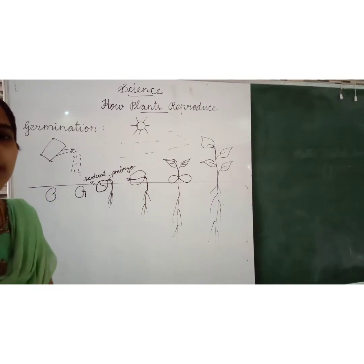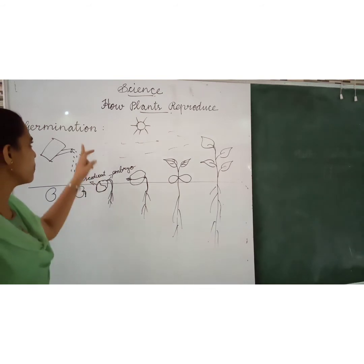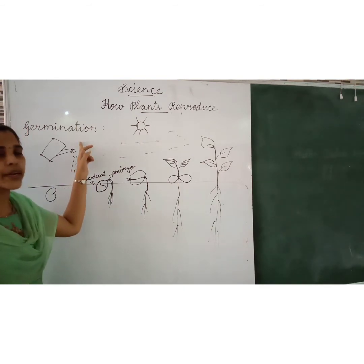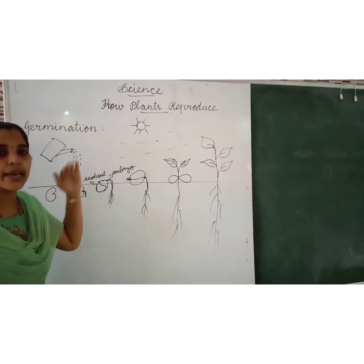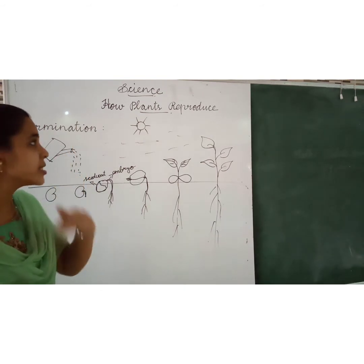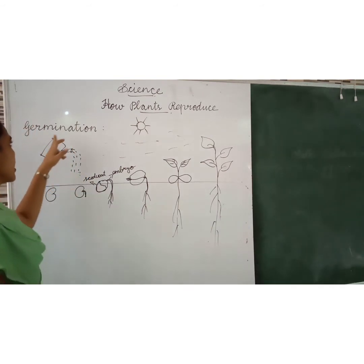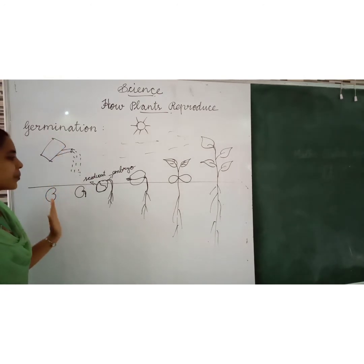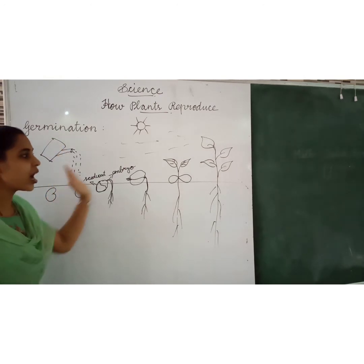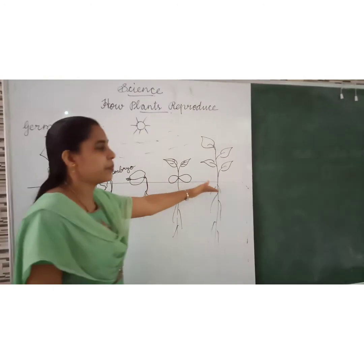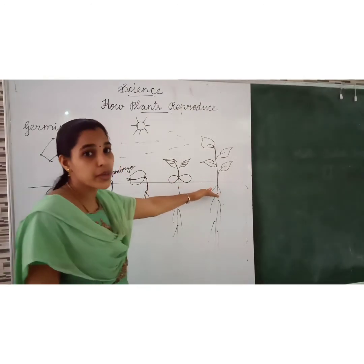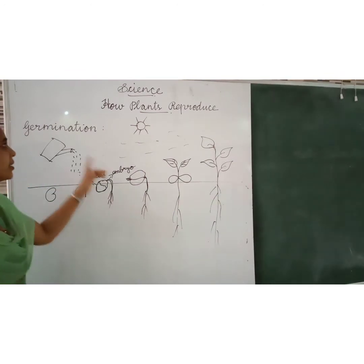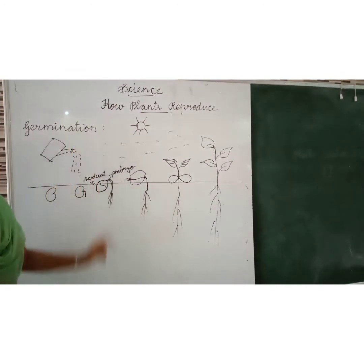Most of the plants reproduce new plants through their seeds. First, let's look at how plants will be grown from the seed. We see that germination comes first — the seed will grow into a new plant because of germination.